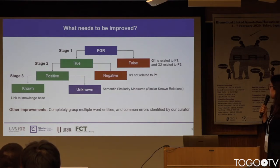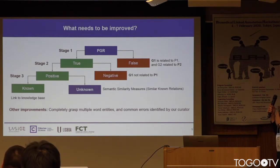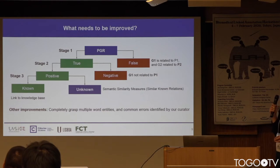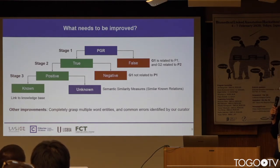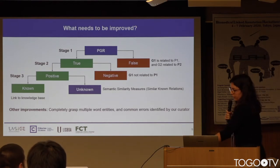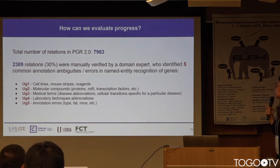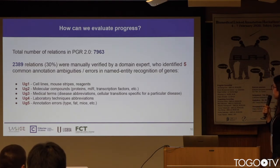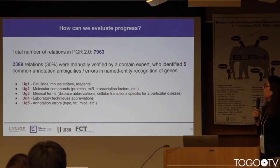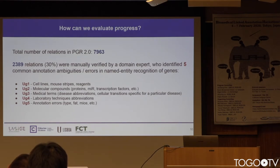We propose using semantic similarity measures to check if an unknown relation has the potential to become a known relation. Other improvements include grasping multiple-word entities, which is a problem we have with phenotypes. Also, our dataset was partially created using biochemistry, and out of almost 8,000 total relations, it contributed 2,389 relations. In those relations, we found additional problems and ambiguities — some easy to fix and others not.